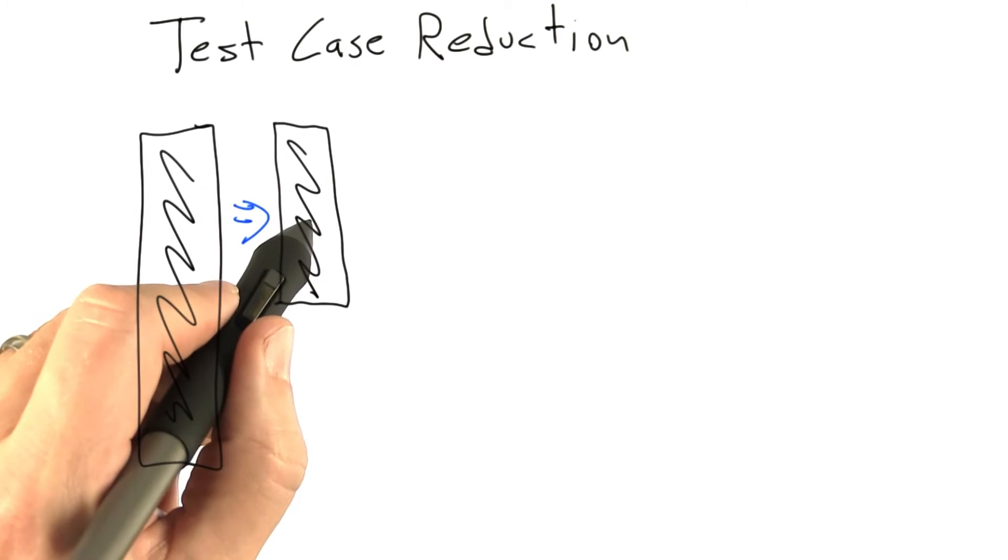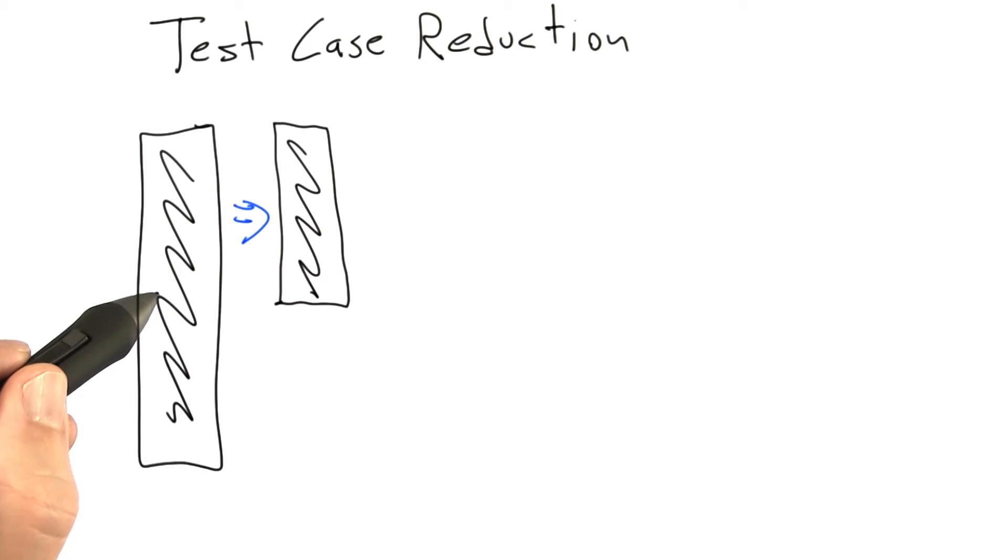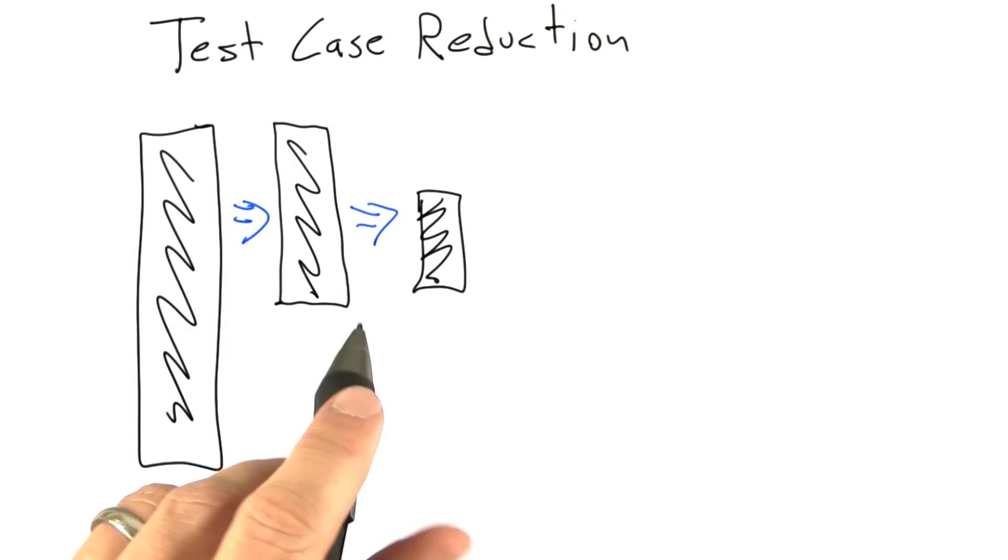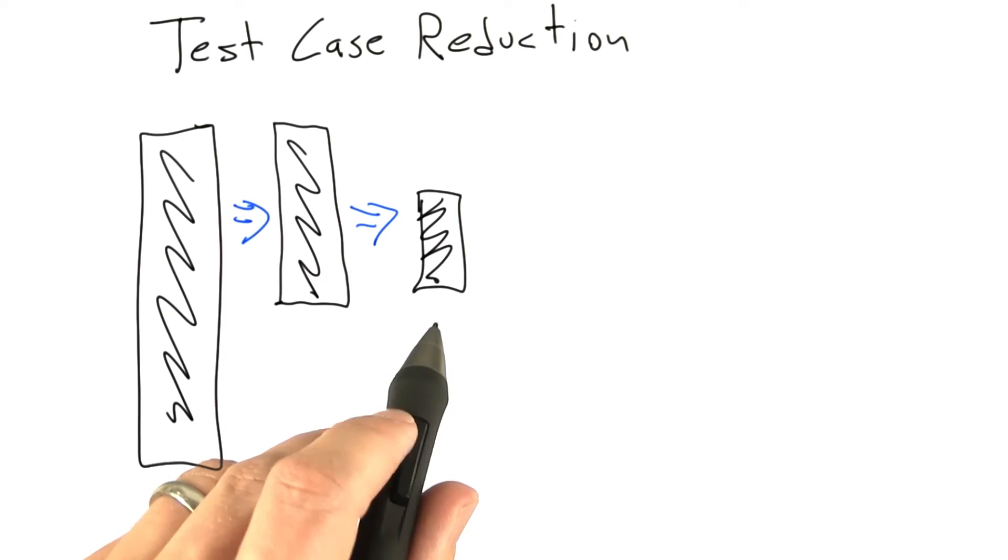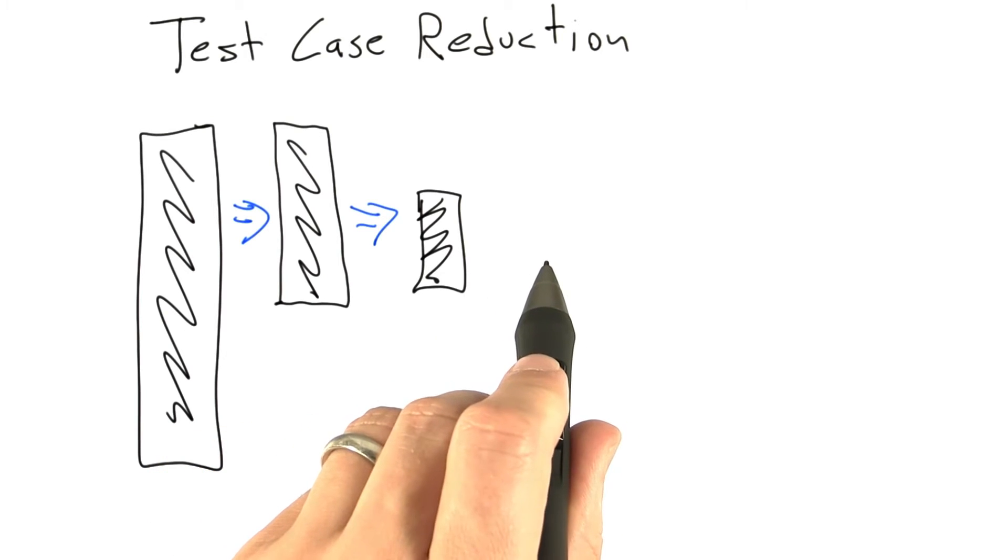If it doesn't, then we go back to our original test case and try again. If it does, we proceed. So now maybe it's this part. And if we're really lucky, at the very end of this process, we'll end up with a really small test case.